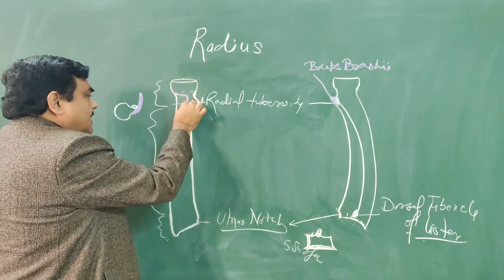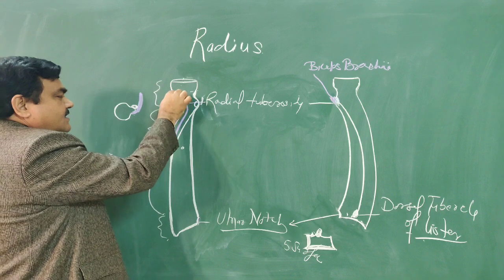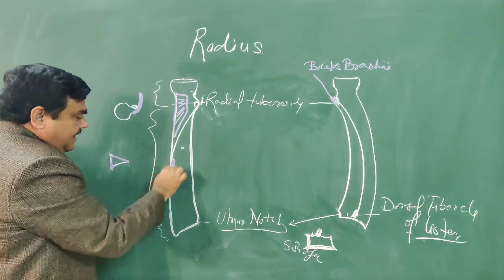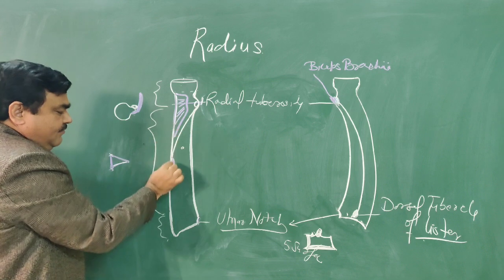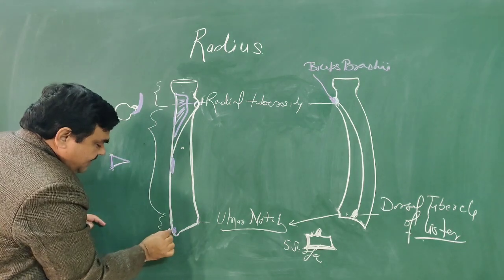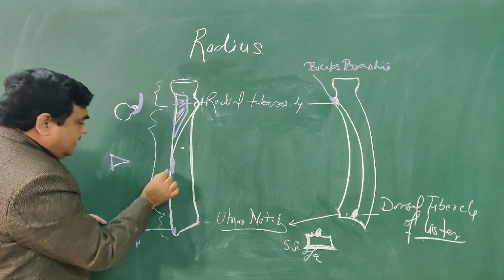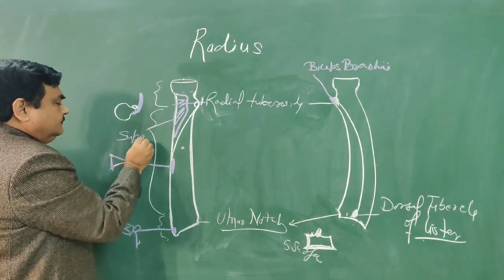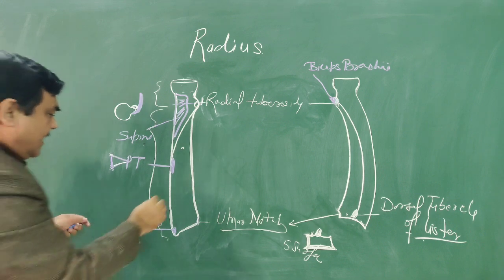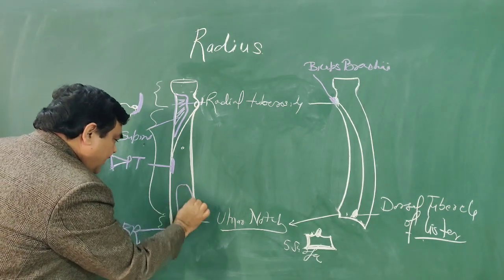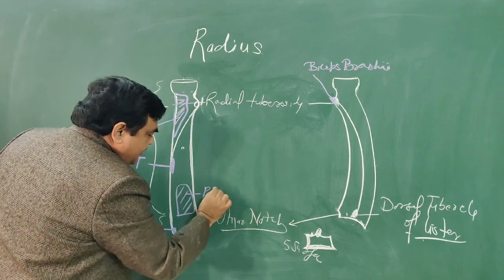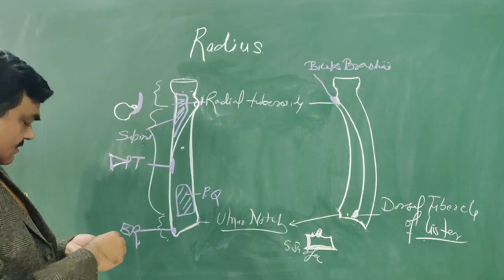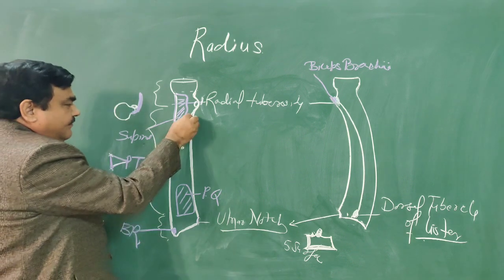Here is the attachment of the supinator muscle. And here is the attachment of pronator teres. Here is brachioradialis. And here is pronator quadratus. Pronator quadratus is inserted here and also takes origin from here. These muscles are all inserted at their respective regions on the radius.